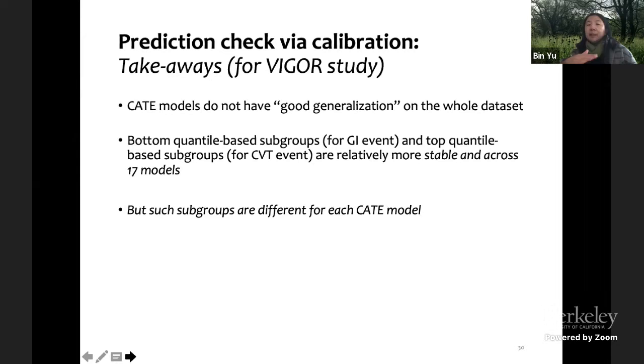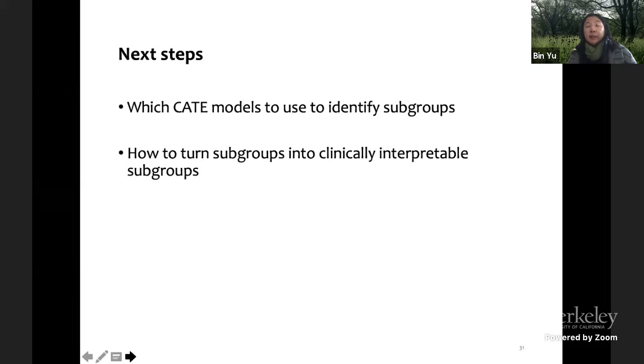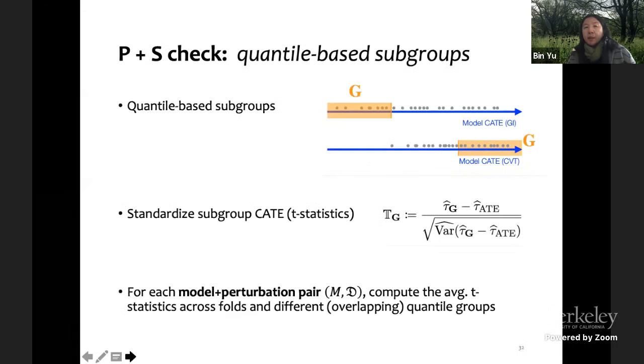But each, because remember I'm cutting based on the estimated CATE surface, so that depends on which surface you cut, you end up with different subgroups. The next steps are which CATE models to use to identify subgroups and how to turn subgroups into clinically interpretable subgroups. So what we end up doing again relies on predictability and stability. Of course all this has to be done computationally with many parallel. It's very easy to parallelize, so we have lots of parallelized calculations to get the results.